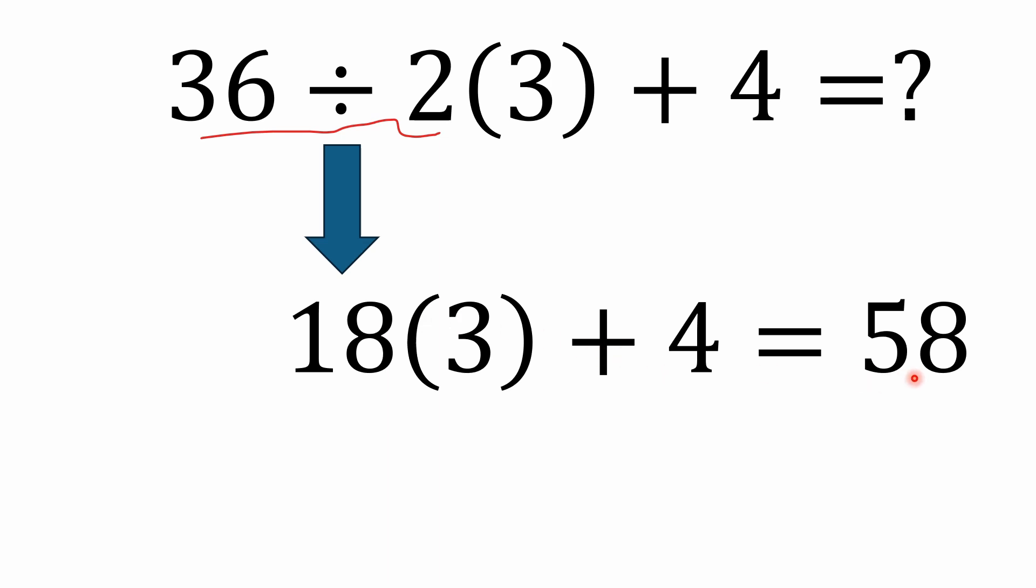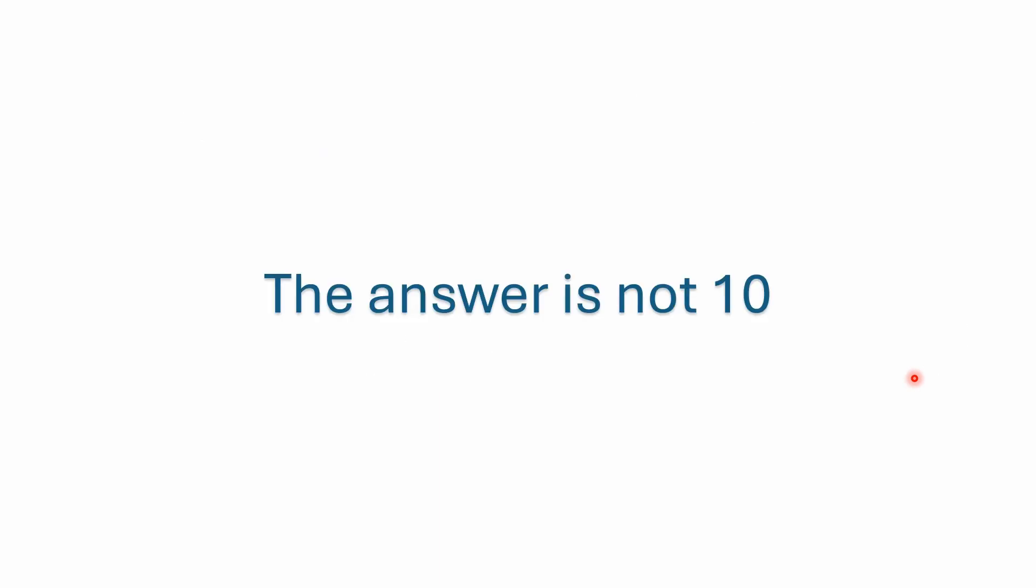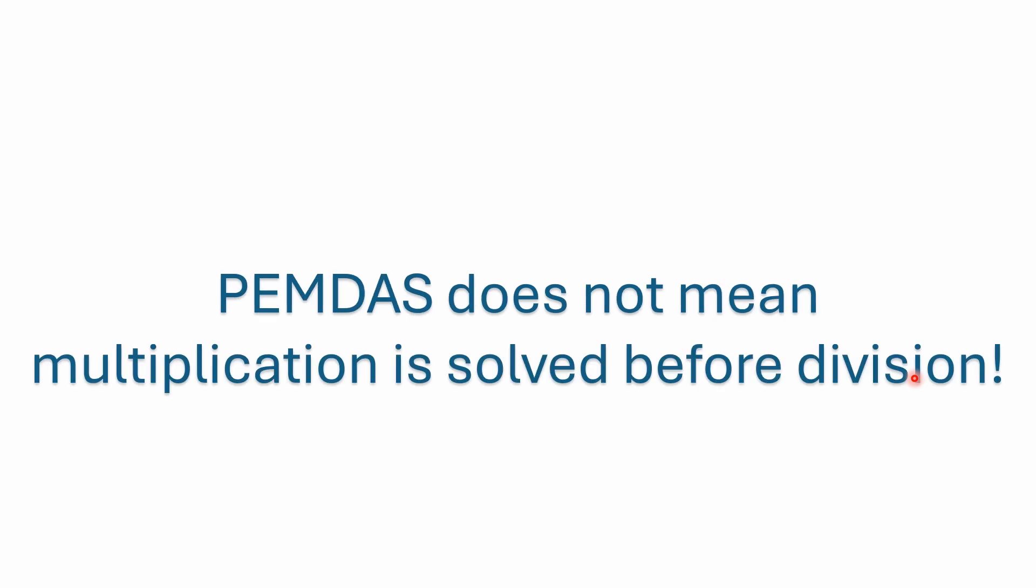Now, I know a lot of people already are saying, no, wait a minute, the answer is 10. But wait a minute, the answer is not 10. And why is that? Well, PEMDAS does not mean multiplication is solved before division. A lot of people will say no, the answer is 10 because of PEMDAS. And the reason people say that is because they falsely think that multiplication is solved before division. And that's not true.